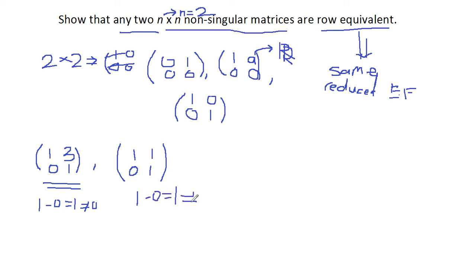Now let's work out the first matrix and make it to reduced echelon form. We have (1,3; 0,1). Now this is already in echelon form.